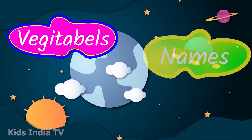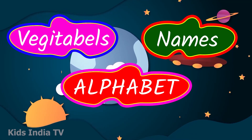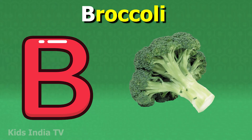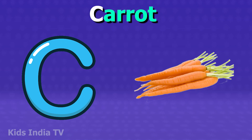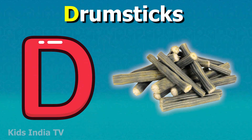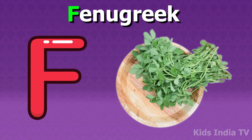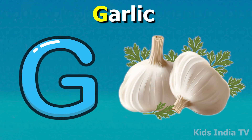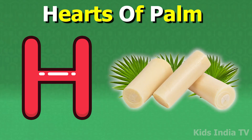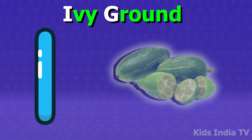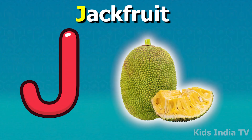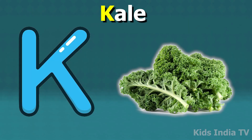Vegetable names according to alphabets: A for ash gourd, B for broccoli, C for carrot, D for drumstick, E for eggplant, F for fenugreek, G for garlic, H for heart of palm, I for ivy gourd, J for jackfruit.